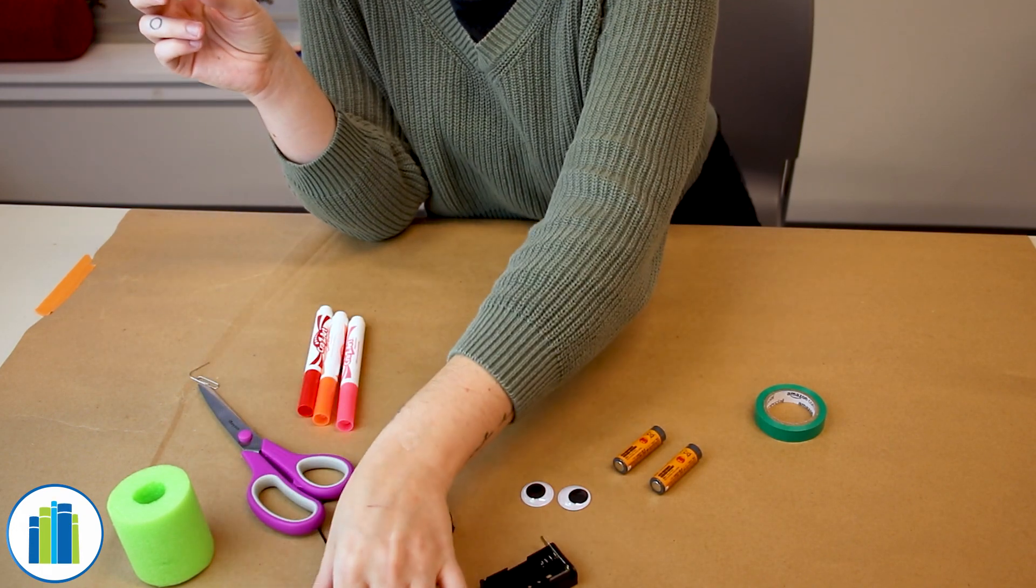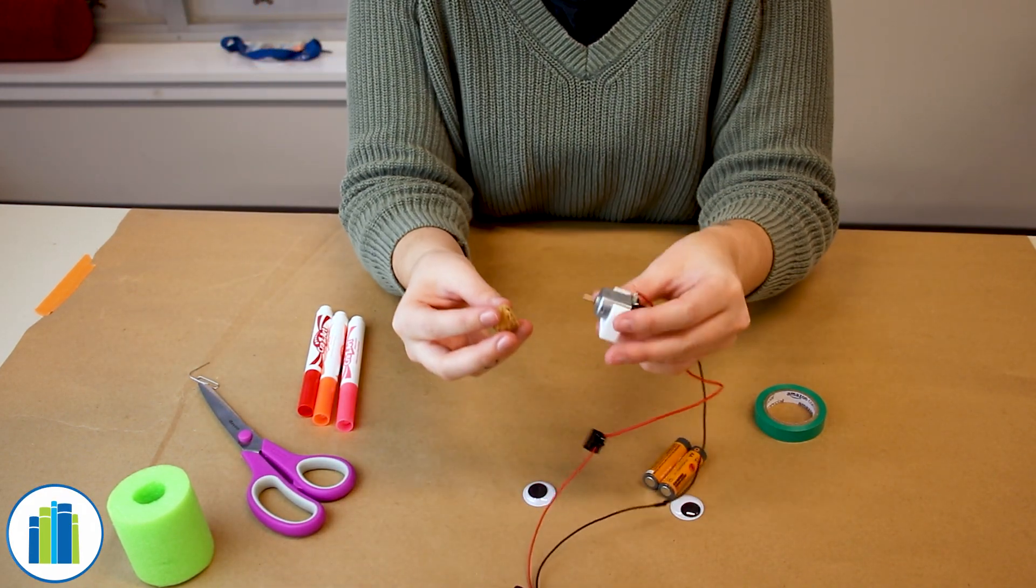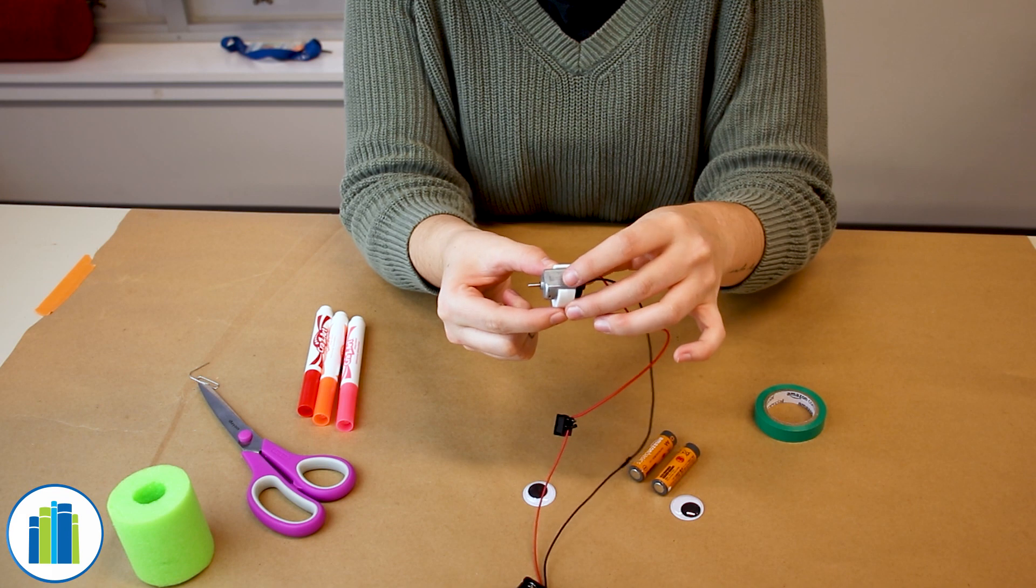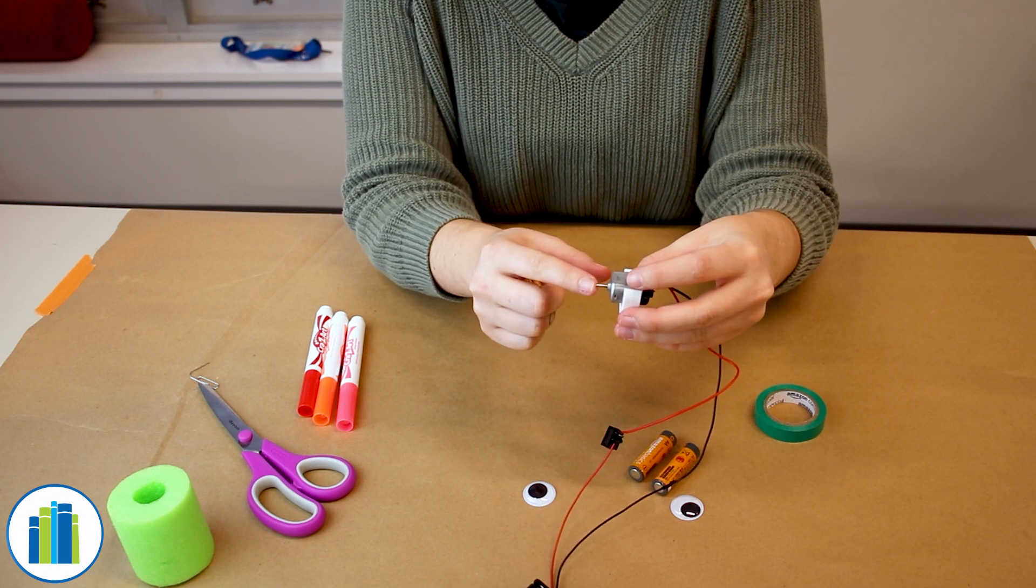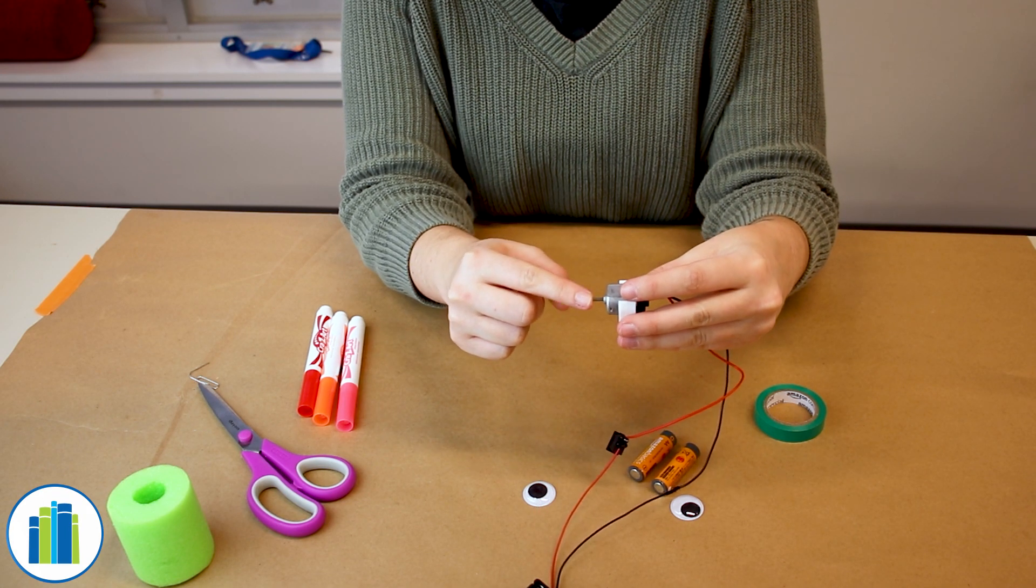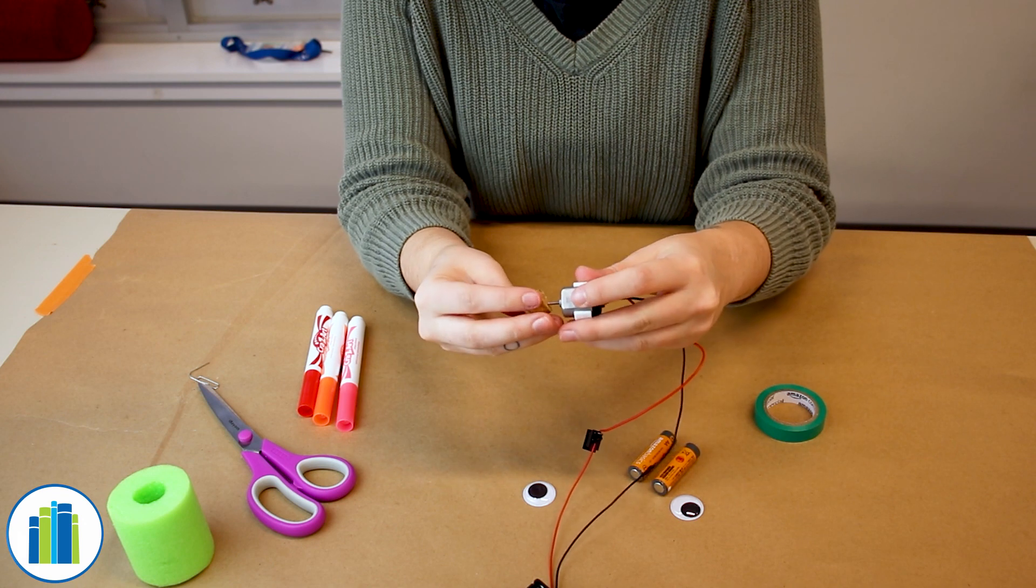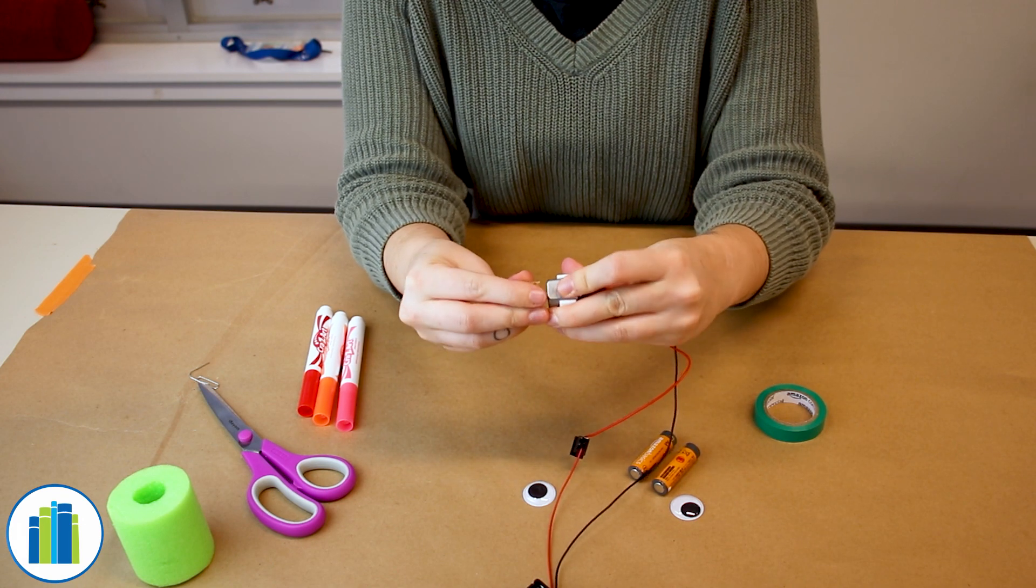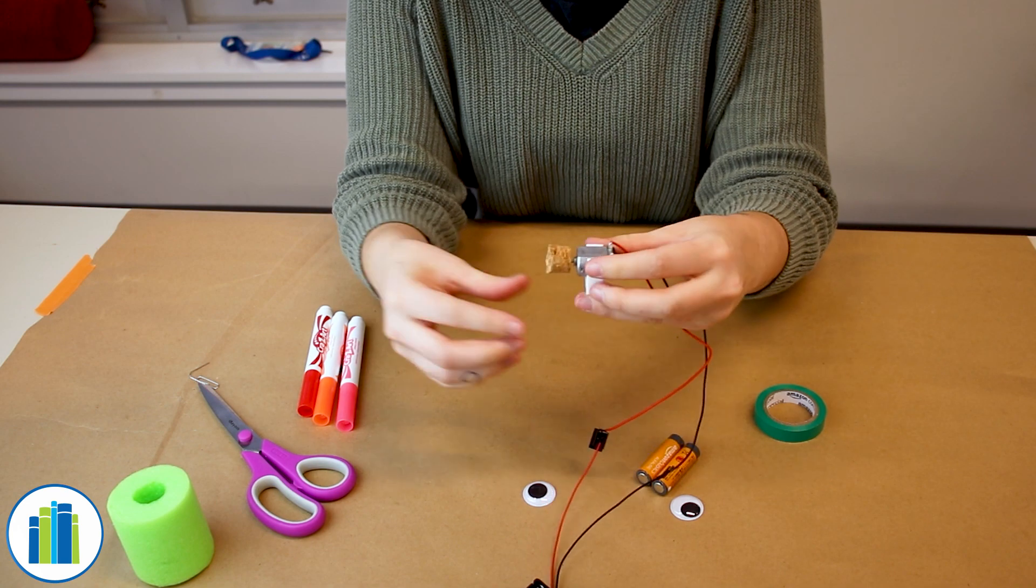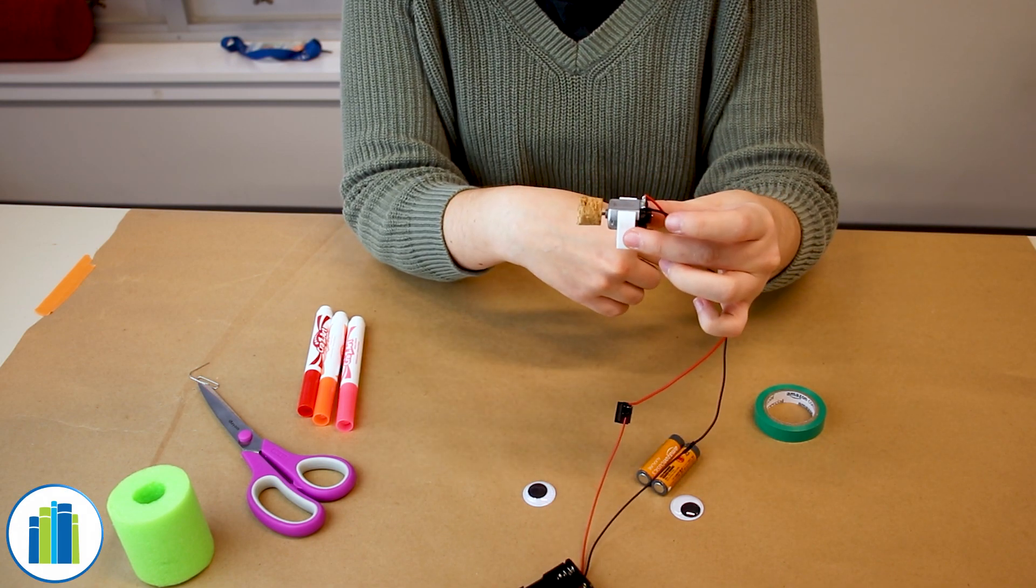Then you can put your paper clip aside and take your motor and find the metal rod that's sticking out the side of it, and then stick that inside the hole that you just made in your cork so that it looks like this.